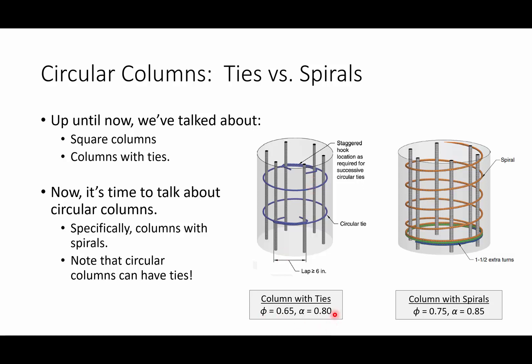With ties, we still use our old phi and alpha values. With spirals, they jump up because we have a lot more lateral reinforcement. Spiral reinforcement pitch — the space between increments — must be limited to three inches. Whereas tied columns had ties every 12 or 16 inches, there's far more lateral reinforcement in a spirally reinforced column than in a tied column. That's one reason you're allowed to use higher phi and alpha values.